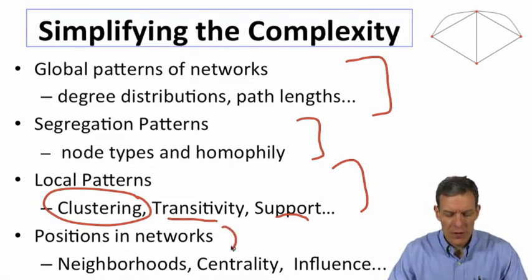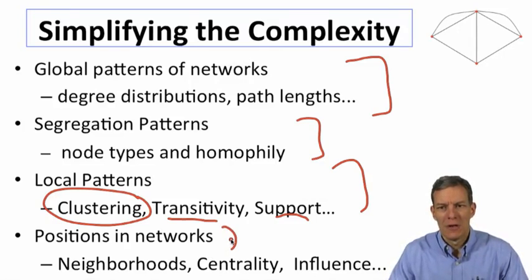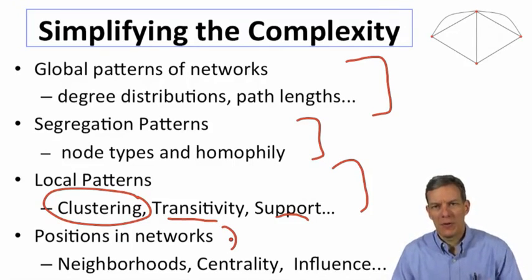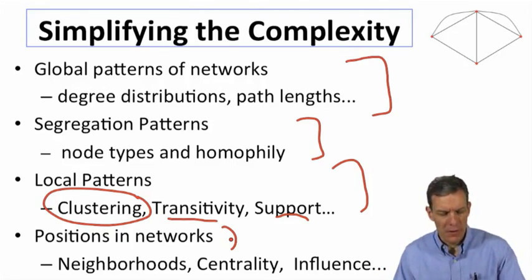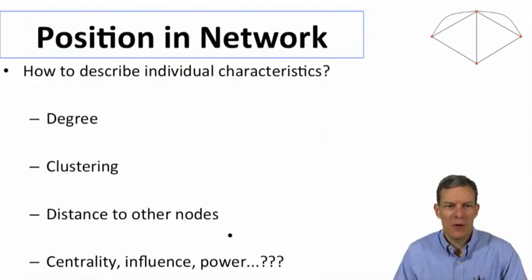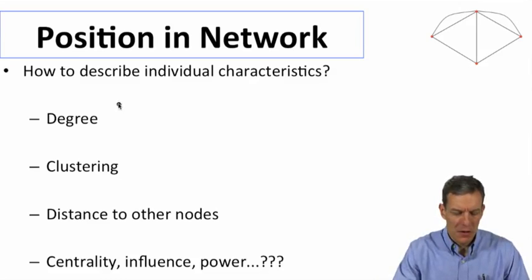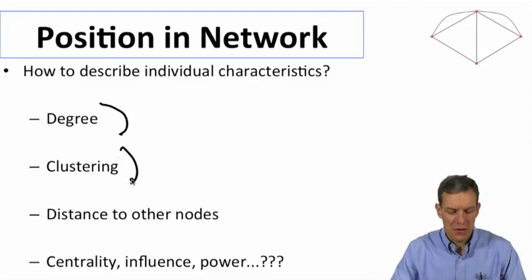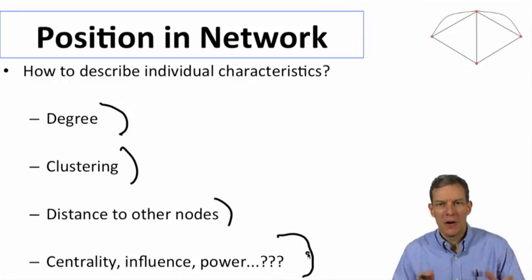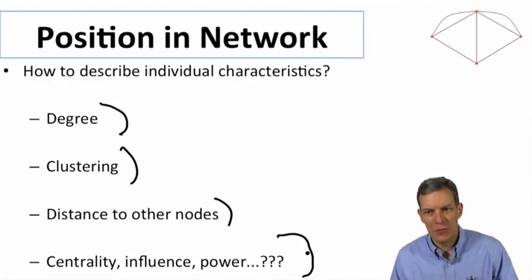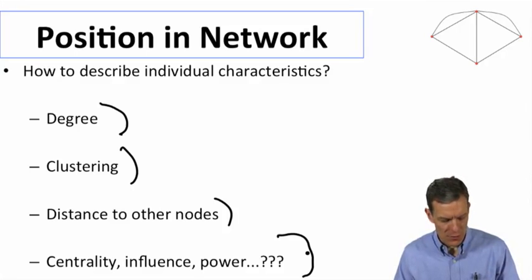We'll also be very interested in understanding how different nodes are positioned in the network — how we can talk about whether a node is important, influential, central, or powerful. The idea of how to describe a position in a network involves different aspects of individual characteristics: how connected it is, how clustered its friends are, distance to other nodes — but more generally trying to capture centrality, influence, and power by building on specific definitions which keep track of a node's position.